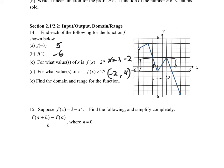For domain and range: the domain is all allowed x-values. The lowest x is negative 5, but it's not included (open circle), and the highest is 4, which is included. Domain: (negative 5, 4]. The range is all allowed y-values: lowest is negative 6 (included) and highest is 5 (included, filled dot). Range: [negative 6, 5].